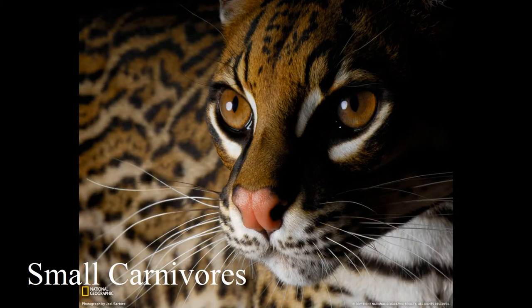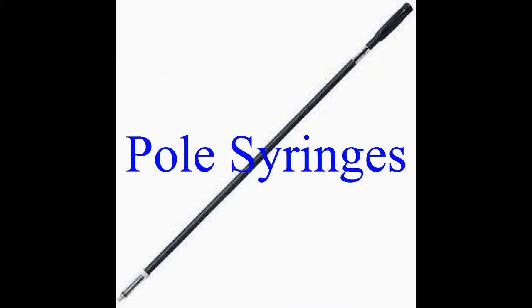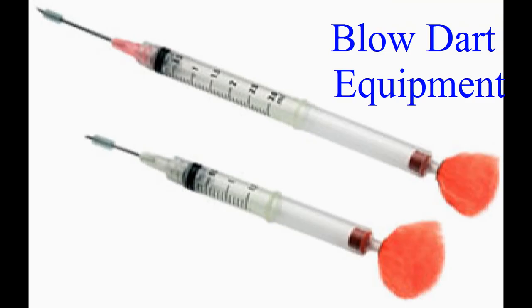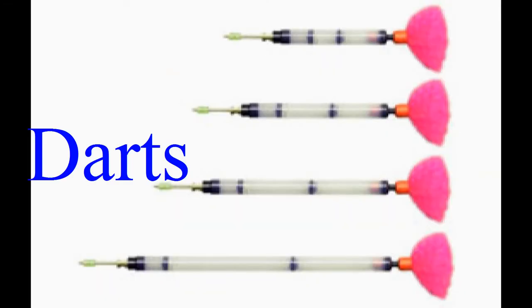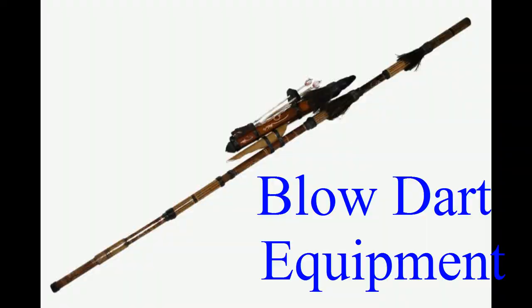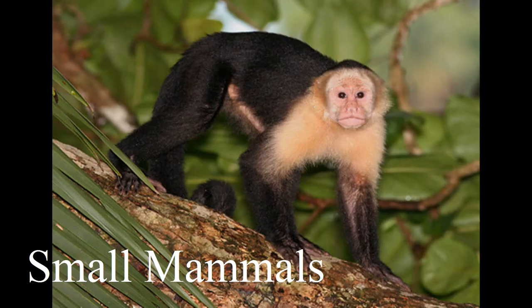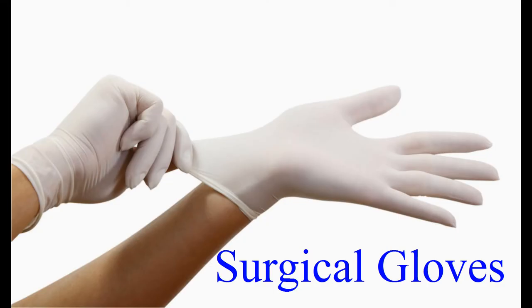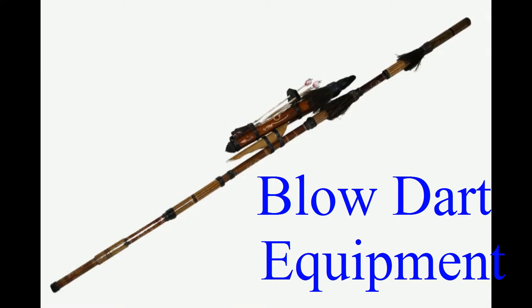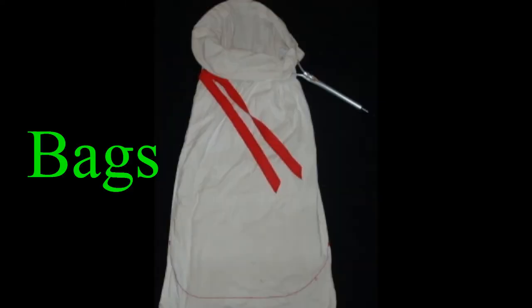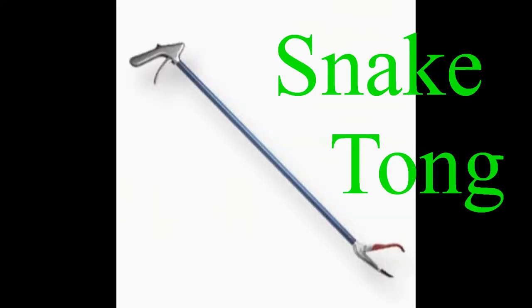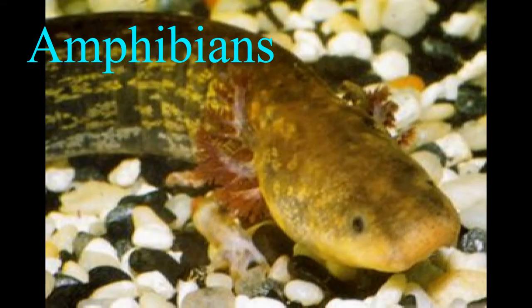Here is an example of some sample equipment used for certain captive animals. For small carnivores, you use nets, pole syringes, blow dart equipment, crates, and squeeze cage. For hoofstock, you use projectile guns and darts, blow dart equipment, and crates. For small mammals, use nets, surgical gloves, pole syringes, blow dart equipment, crates, and squeeze cage. For reptiles, use nets, bags, plastic tubes, snake tongue, and snake hook.